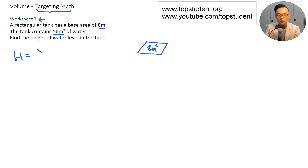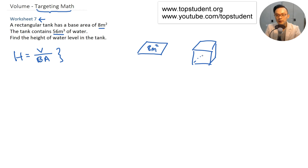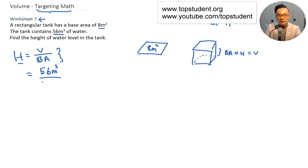Height equals volume divided by base area. Just remember: base area times height gives volume. So base area multiplied by height equals volume. I can also show this as a triangle with volume, base area, and height. To find height, take volume divided by base area, which is 56 cubic meters divided by 8 square meters. That gives the answer, which is the height.